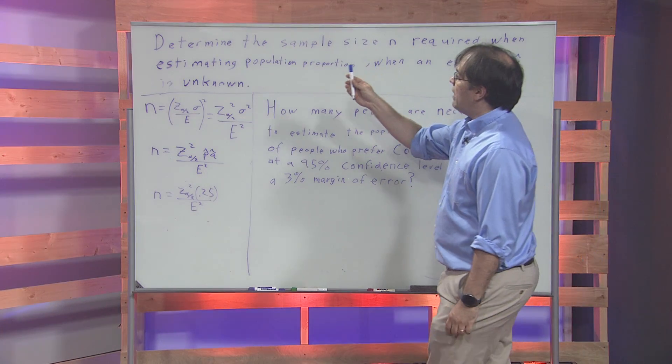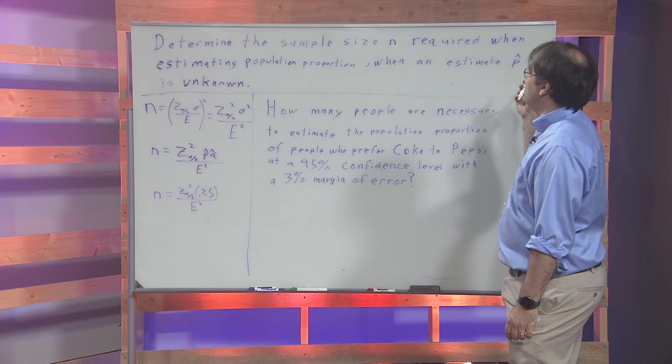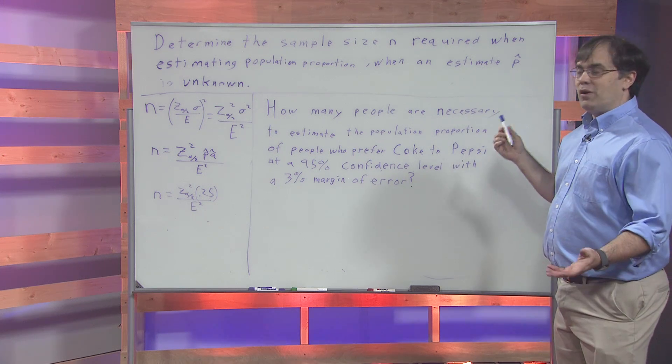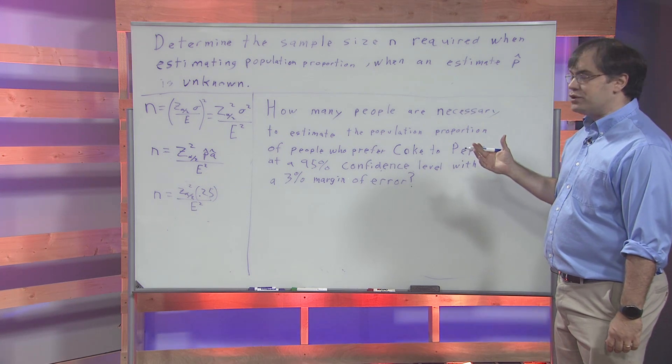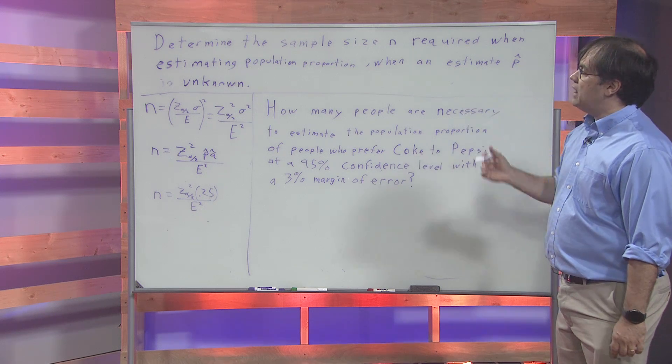Hi. Today we're going to talk about how we determine the sample size n required when we're estimating a population proportion when the estimate p-hat is unknown.